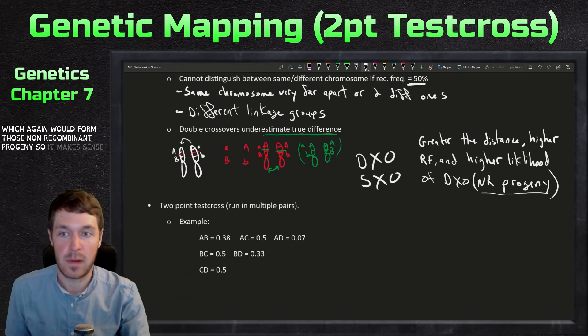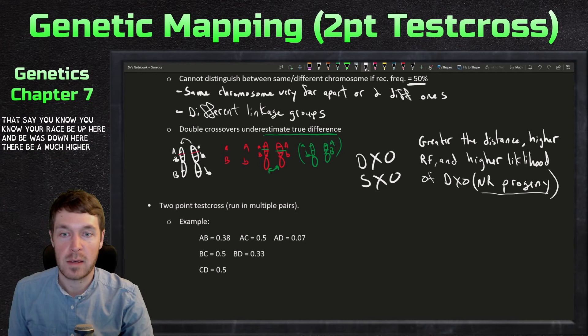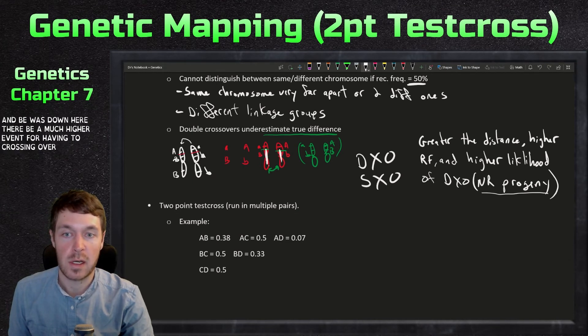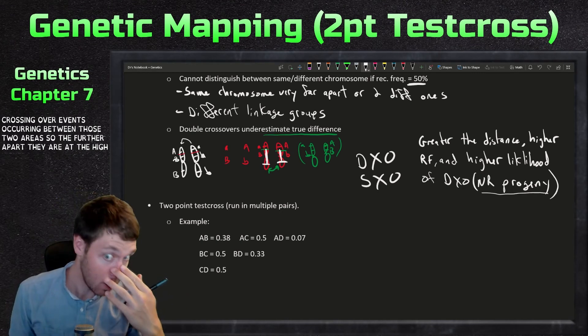which again would form those non-recombinant progeny. So it makes sense. Let's say we erase B up here and B was down here. There'd be a much higher event for having two crossing over events occurring between those two areas. So the further apart they are, the higher the likelihood.